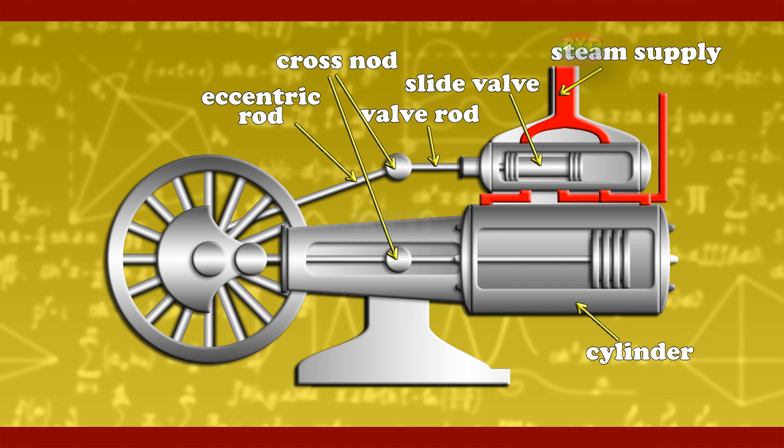Cylinder: originally, these really were just tubes. However, nowadays extruded profiles instead of tubes are used for most cylinders. The advantage is that a profile can also be used for additional functions, such as mounting sensors, mounting options for attachment parts, and one-sided pressurization of double-acting cylinders.